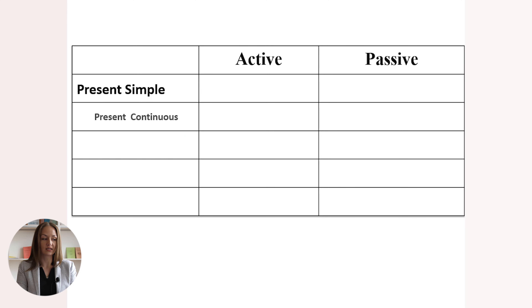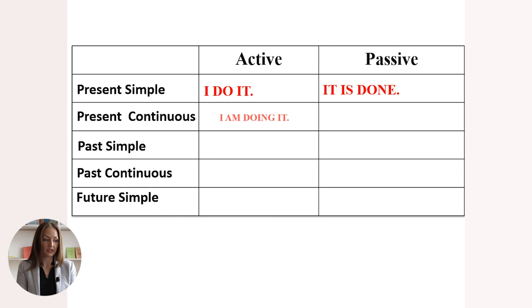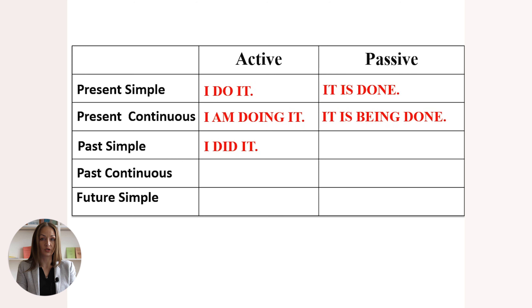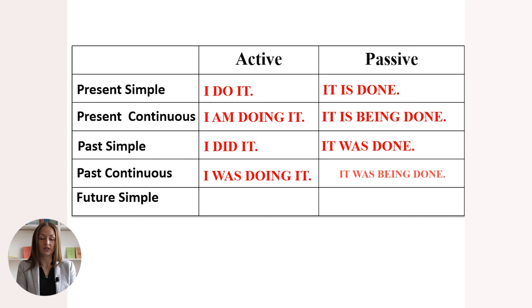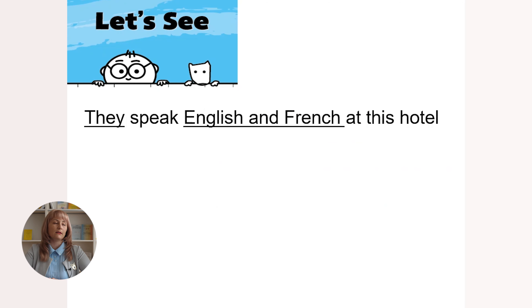In the following scheme, we analyze the change from active into passive for: present simple, present continuous, past simple, past continuous, and future simple. Present simple: 'I do it' → 'It is done.' Present continuous: 'I'm doing it' → 'It is being done.' Past simple: 'I did it' → 'It was done.' Past continuous: 'I was doing it' → 'It was being done.' Future simple: 'I will do it' → 'It will be done.'